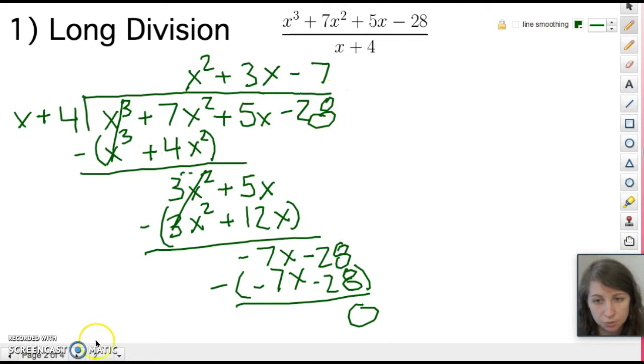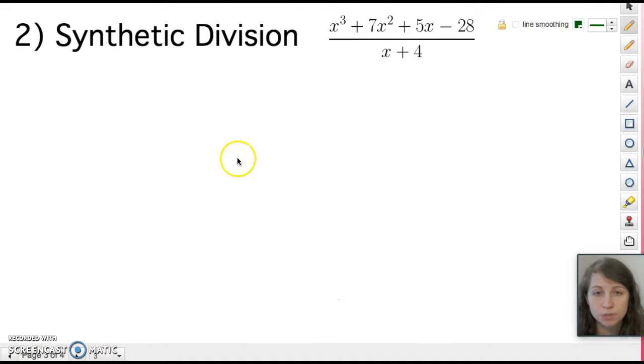All right let's go on to synthetic division, our second method. So synthetic division only works when we're dividing by a binomial and when that binomial has a coefficient of 1 on the x term. So if this was for example 2x + 4 we could not use this method. The only reason we can use it is because this x is just by itself.